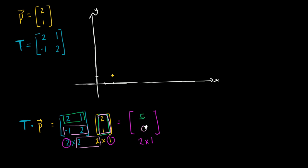So now we have the position five comma zero, which is right over here. So one, two, actually, one, two, three, four, five.